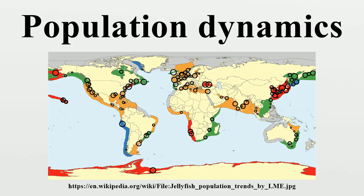In the continuous time version of exponential growth, some species have continuous reproduction. Where dN/dt is the rate of population growth per unit time, R is the maximum per capita growth rate, and N is the population size. At R greater than 0, there is an increase in per capita growth rate; at R equals 0, the per capita growth rate is 0; and at R less than 0, there is a decrease in per capita growth rate.